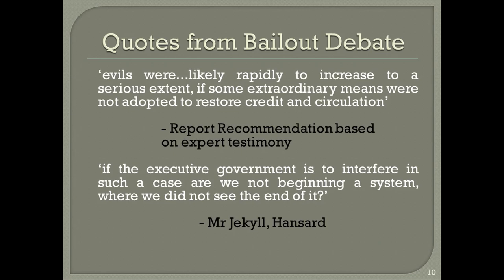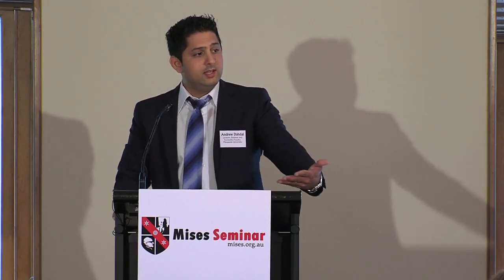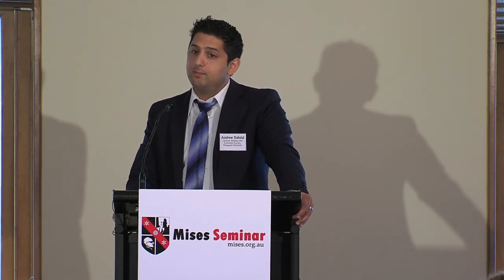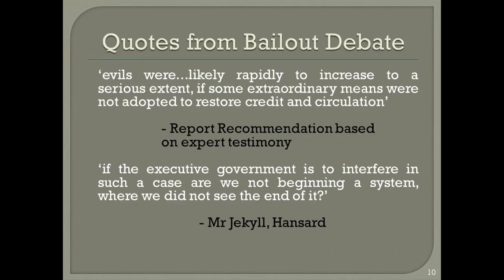I fully expected the next line to say the scheme shall be called TARP. But when the report was debated in Parliament on the 29th and 30th of April, 1793, several MPs took serious issue with the bailout arrangements. Some notable speeches came from a Mr Jekyll, who asked the House: 'If the executive government is to interfere in such a case, are we not beginning a system where we did not see the end of it?' Another member, Mr Fox, noted: 'If the sum now proposed — five million pounds — is insufficient, were we to stop? Parliament and government were to assume a new character and a new function — the one legislative, the other executive. But now they were about to depart from their natural functions and support the credit of commercial houses by advancing money upon their stock in trade. The system was dangerous to the constitution.'